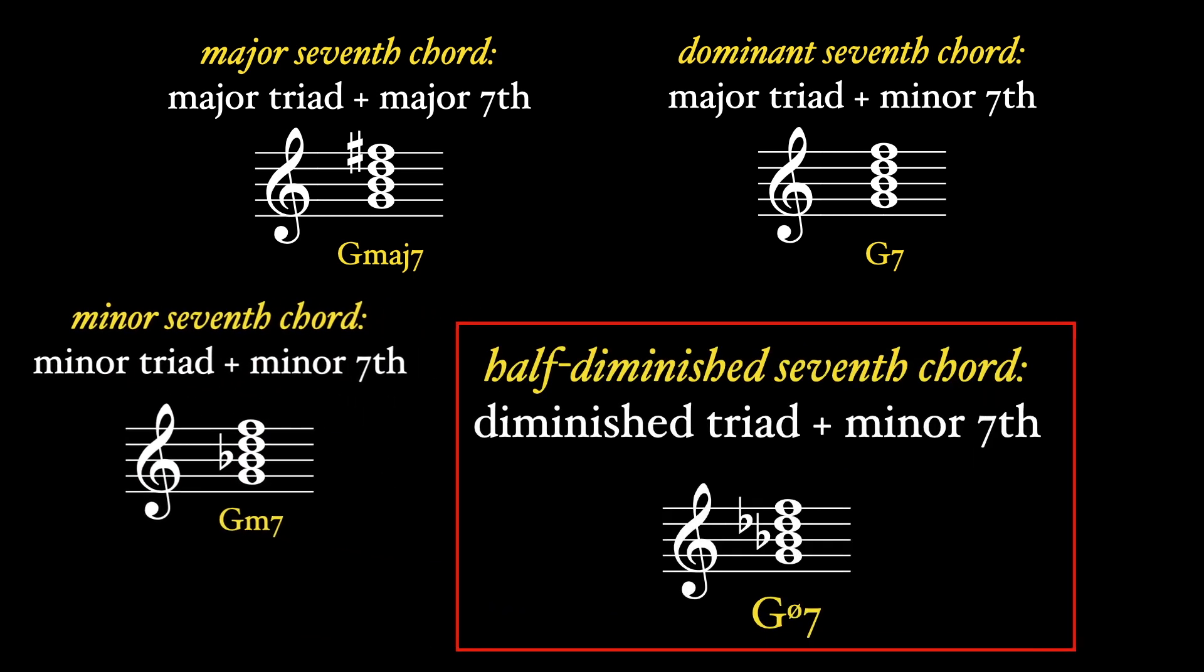The last two seventh chord types begin with a diminished triad. A diminished triad plus a minor seventh creates a diminished minor seventh chord, more commonly known as a half diminished seventh chord.